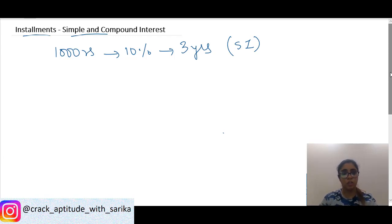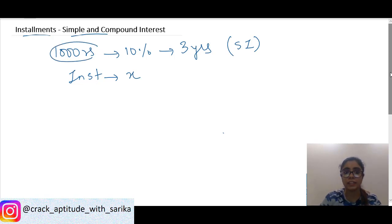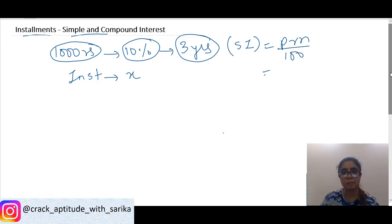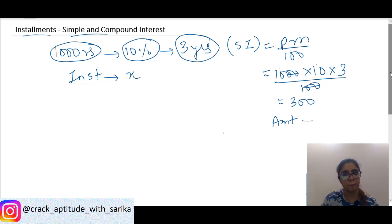Let's say the installment I pay at the end of every year is x rupees. Total simple interest = P×R×T/100 = 1000×10×3/100 = 300 rupees. So the total amount to be paid = 1000 + 300 = 1300 rupees. That is my total debt — the total money I have to return at the end of three years.